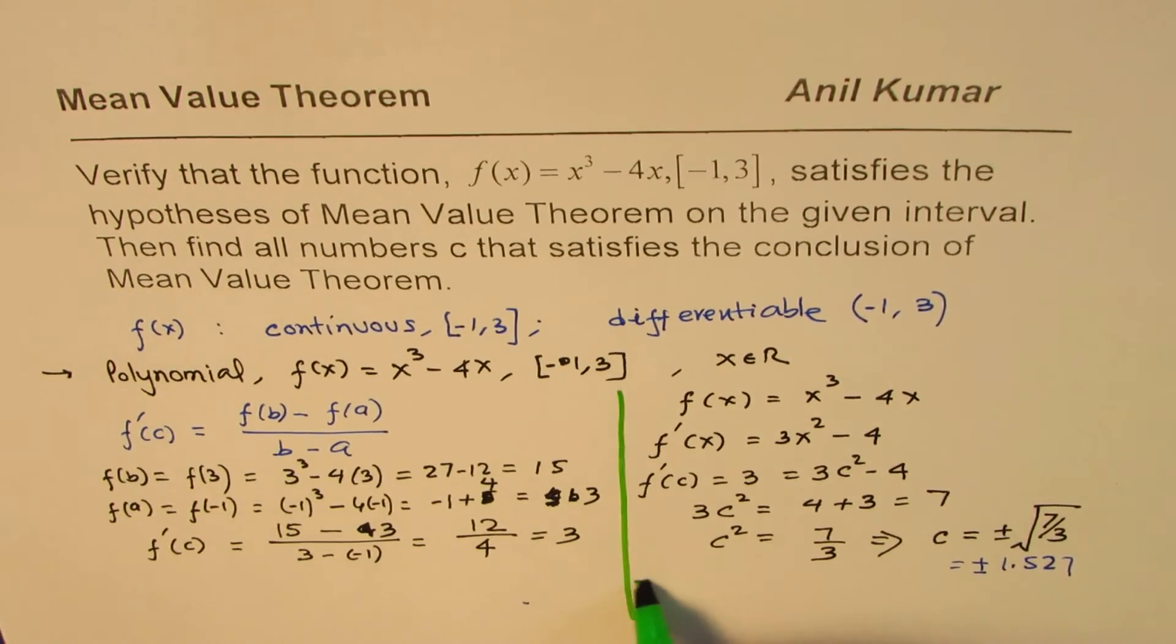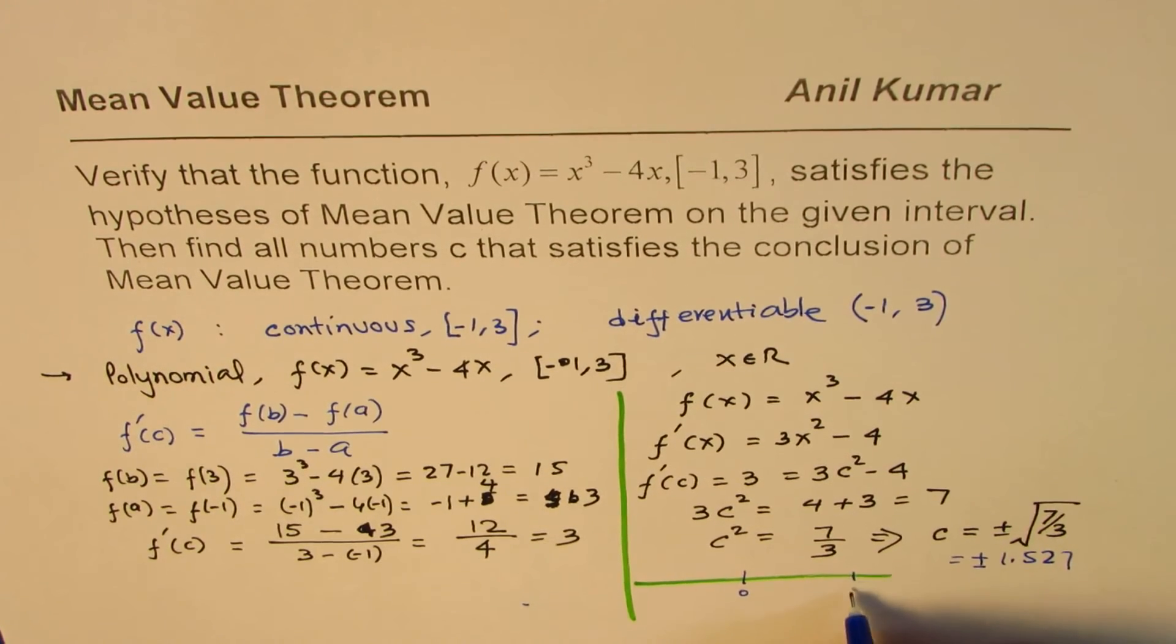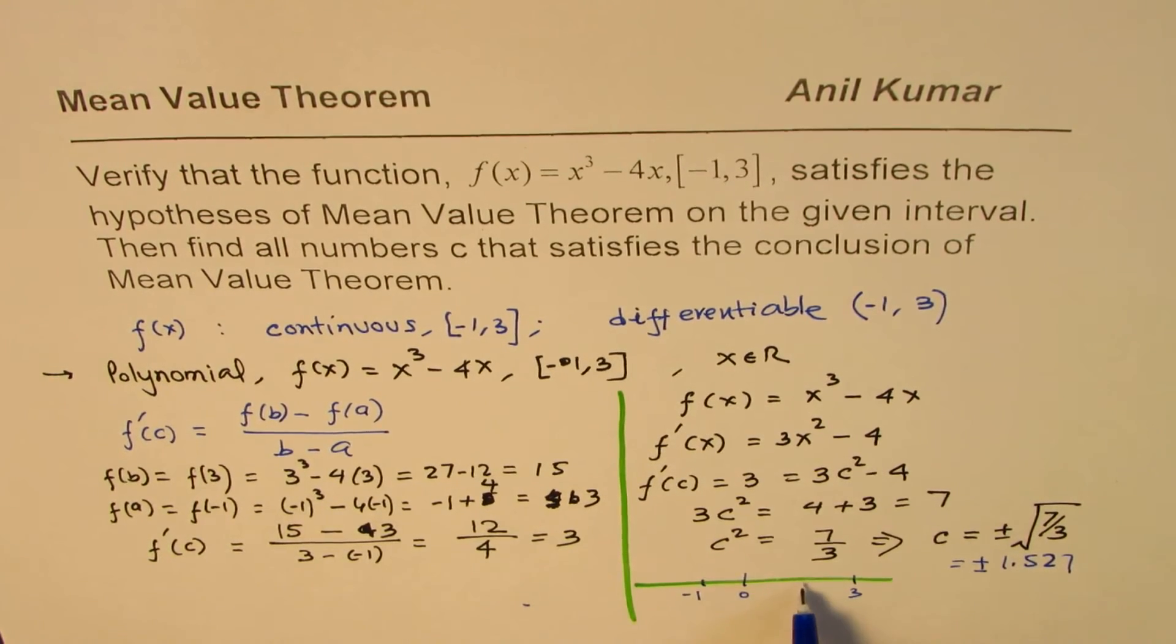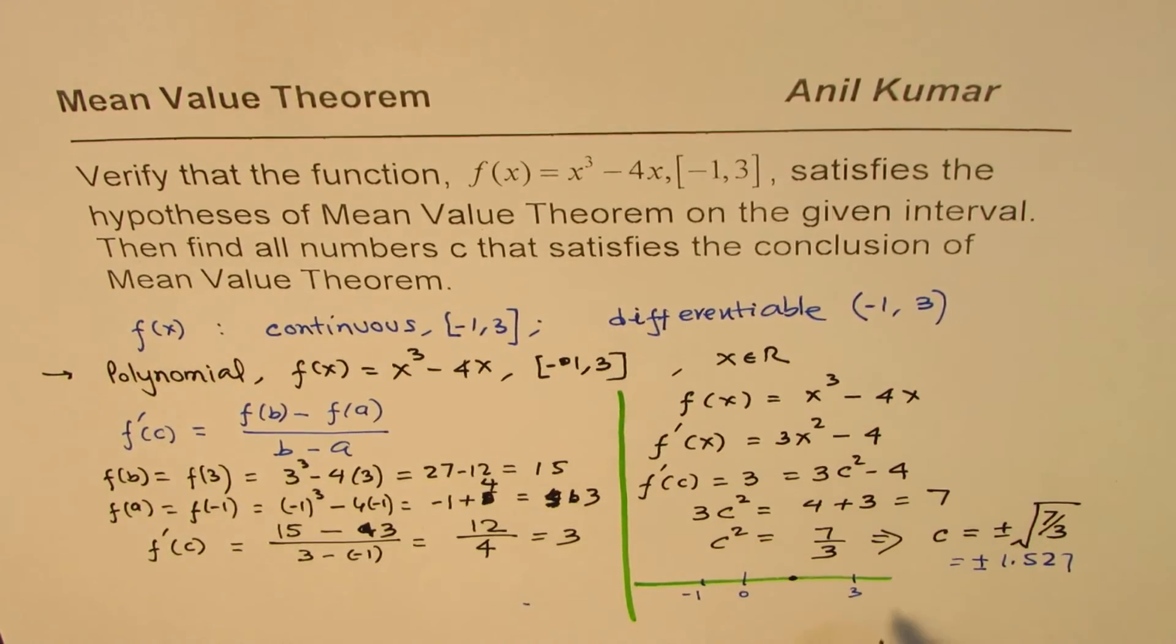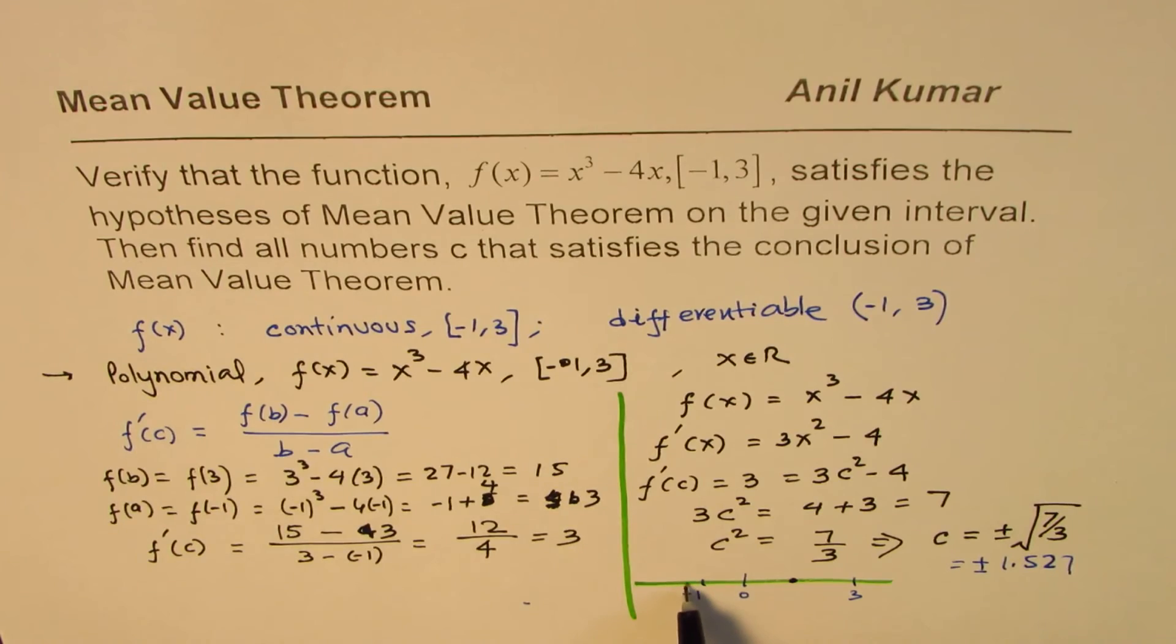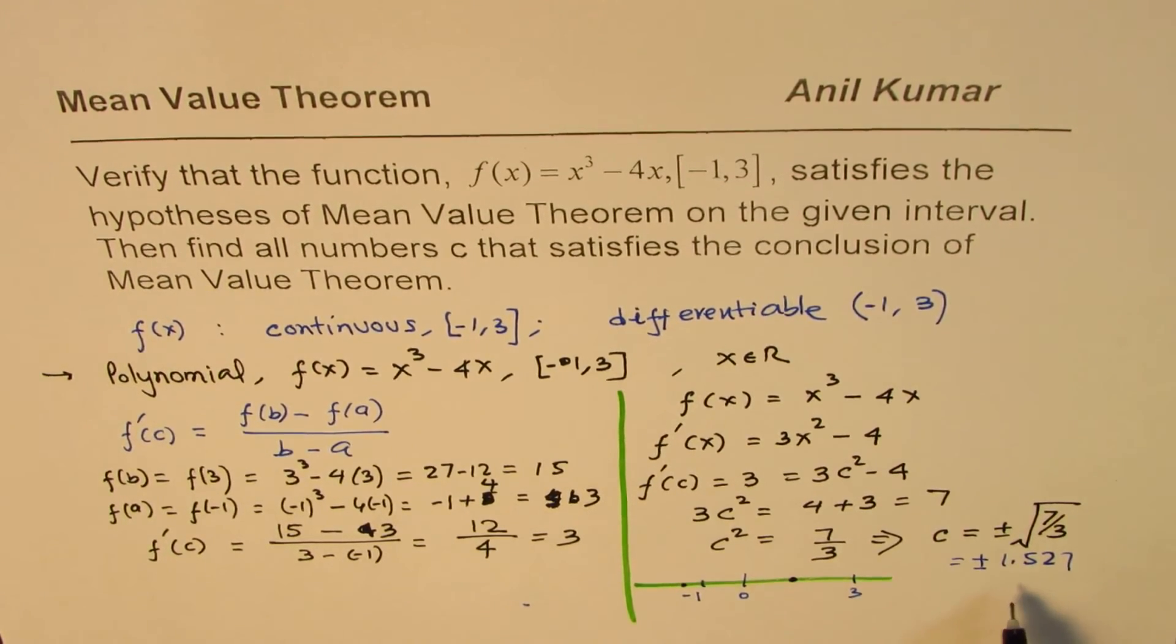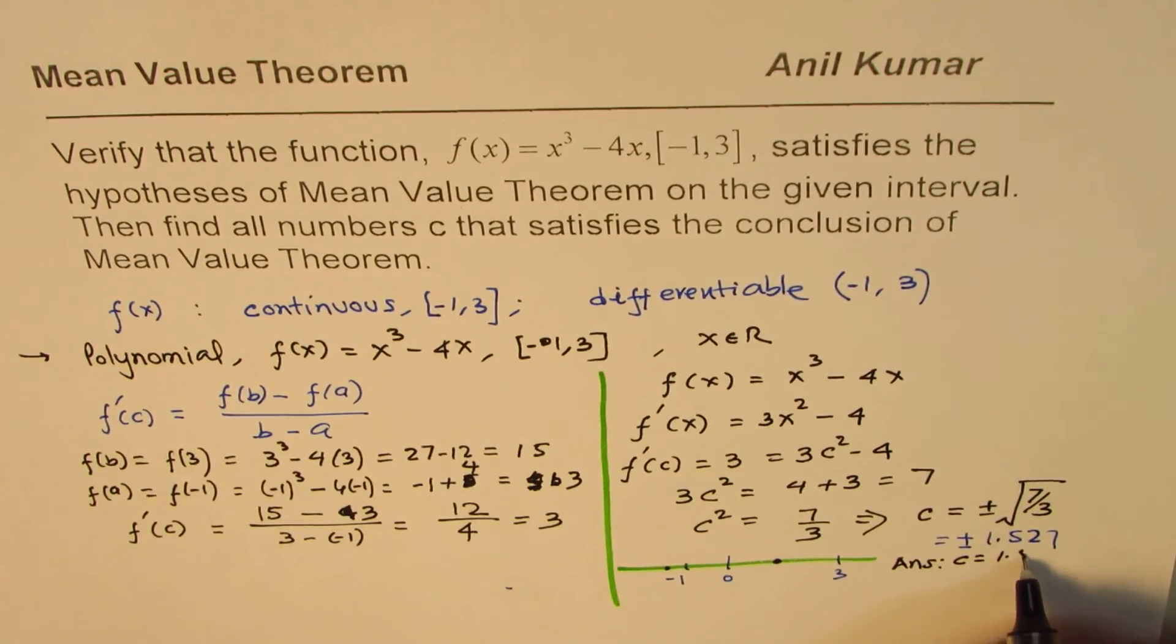So, on a number line, you can see that on a number line, if we have 0 here, and let's say this is 3, and this is your minus 1, then plus 1.5 is kind of in between somewhere. Let's say here. And the minus 1.5 will be outside our domain. So, the value of c which really satisfies the answer is the plus value.